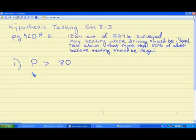Step two is to write out the opposite of this claim. So if the original claim is P greater than 80%, then the opposite of the claim is P less than or equal to 80%.